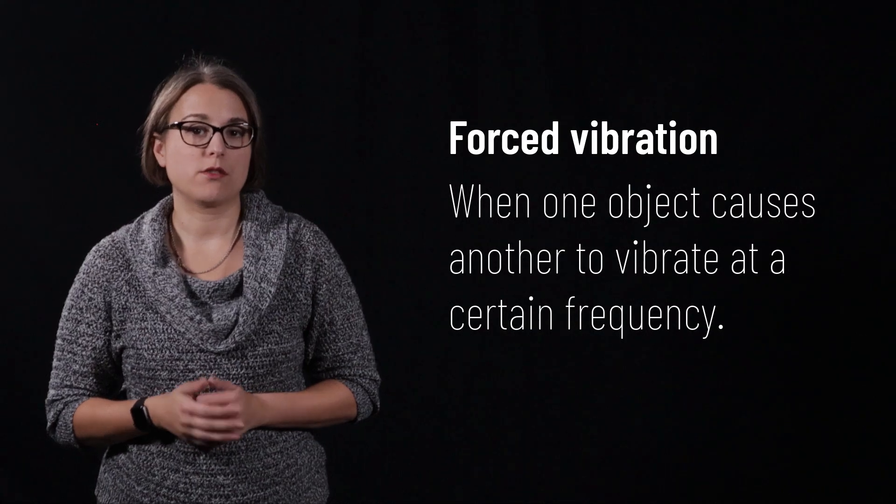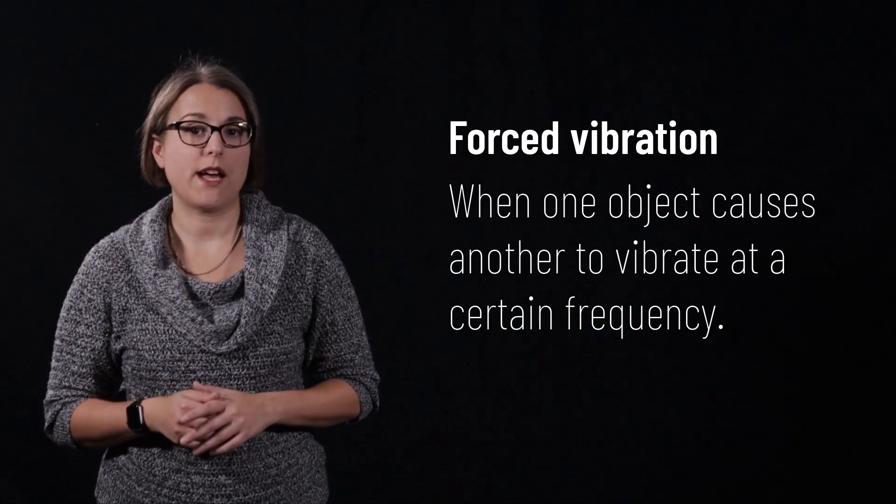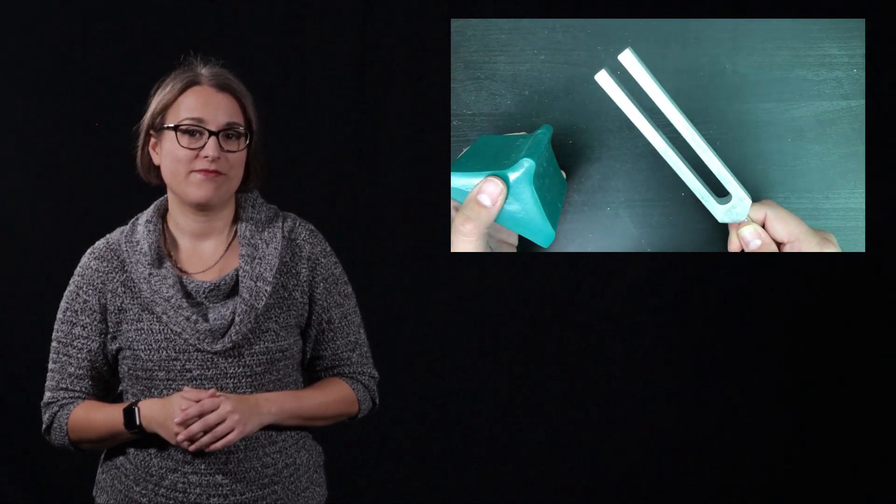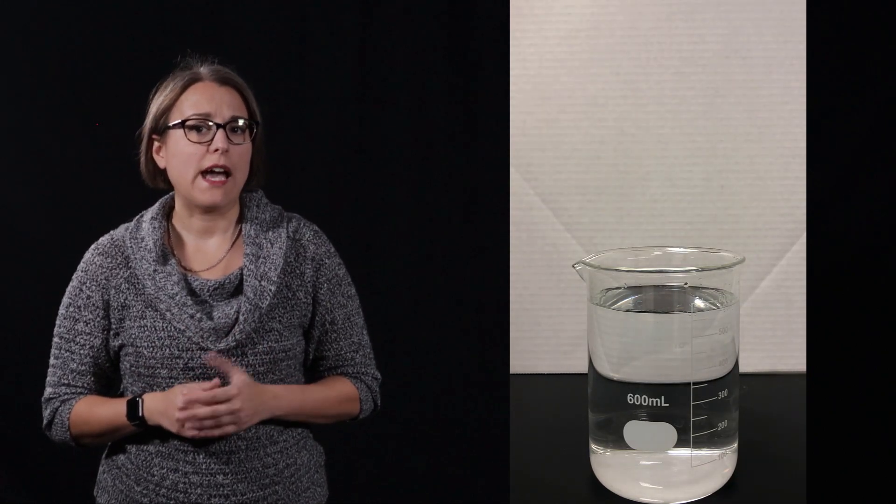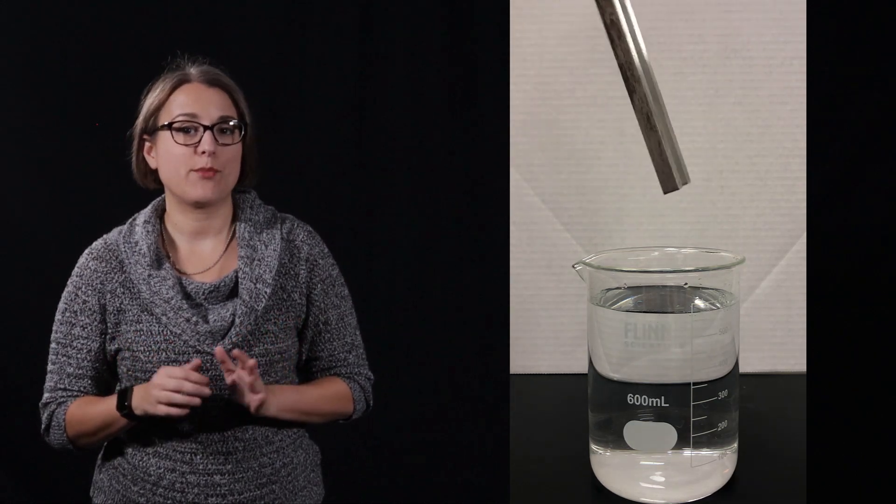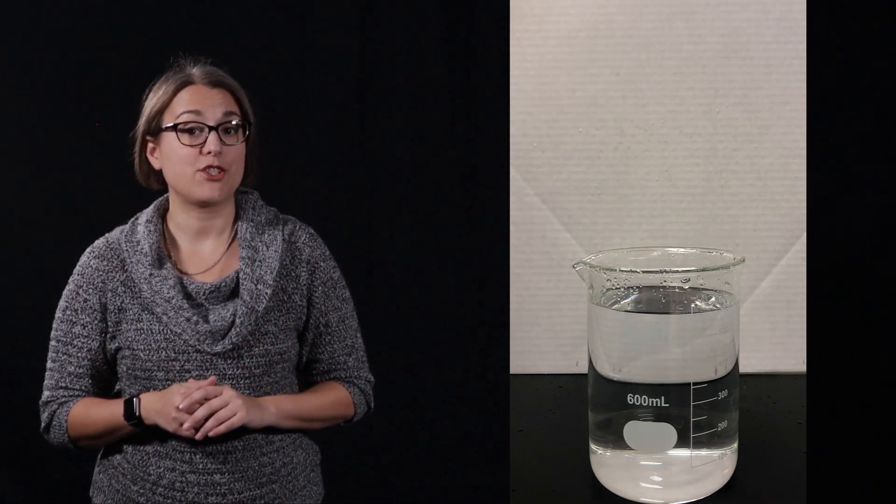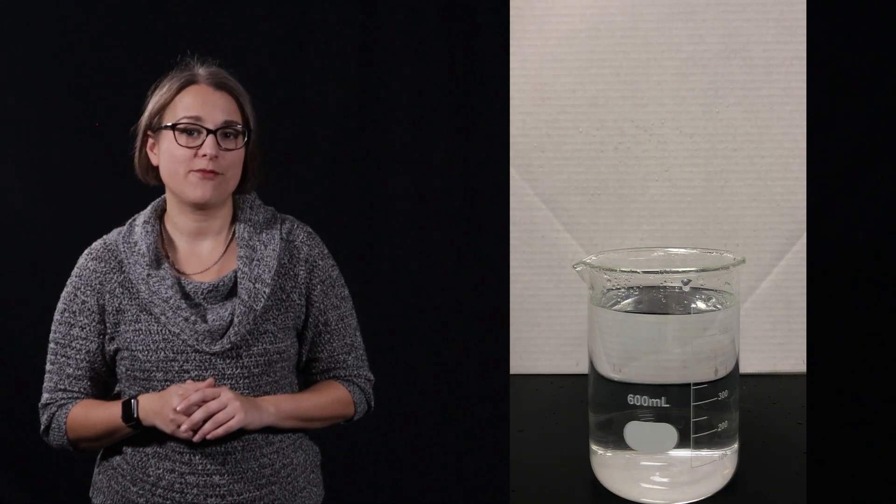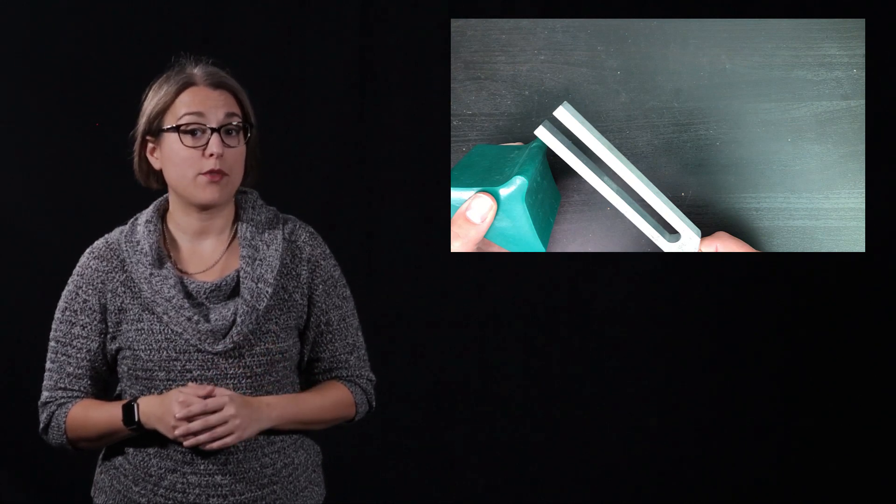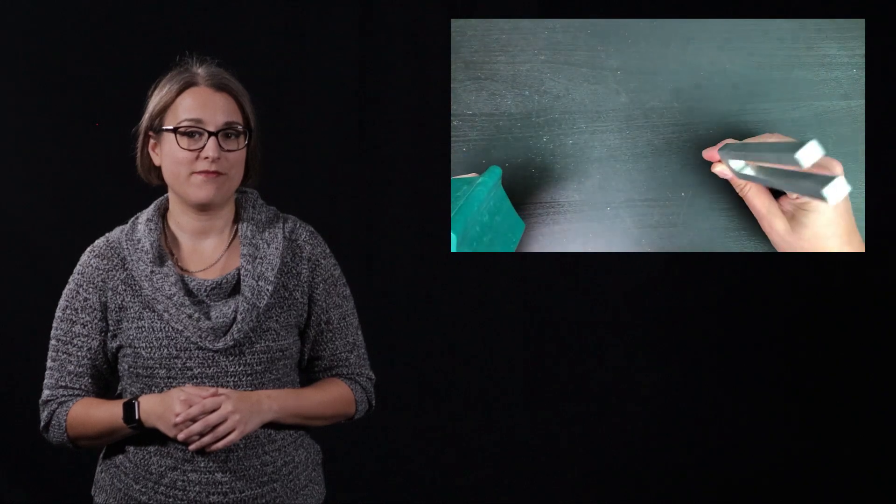A forced vibration occurs when one object causes another object to vibrate at a certain frequency. Striking a tuning fork with a mallet causes it to vibrate. There is energy in these vibrations. After striking the tuning fork, I placed it into a beaker of water. The water splashes out of the beaker, which is a great visual indication of the energy stored in the tuning fork after being forced to vibrate. When I get a tuning fork to vibrate, I can place it on a table and cause the table to vibrate at the same frequency as the tuning fork. Plucking a guitar string causes the body of the guitar to vibrate as well, providing another example of forced vibration.